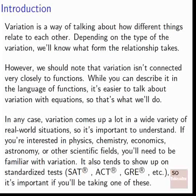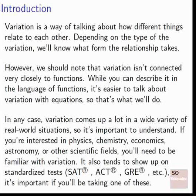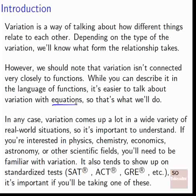Variation is a way of talking about how different things relate to each other. Depending on the type of variation, we'll know what form the relationship takes. Variation isn't connected very closely to functions. While this sits in the section on functions, it's only sort of connected to functions. We can describe it in the language of functions, but it's much easier to talk about variation using equations — y equals stuff involving x — what we're used to from doing lots of algebra.